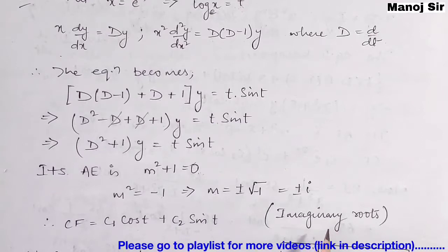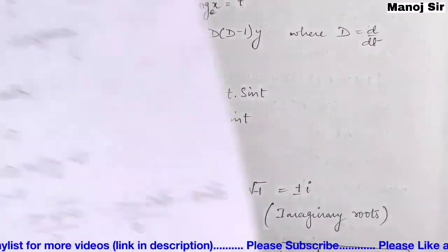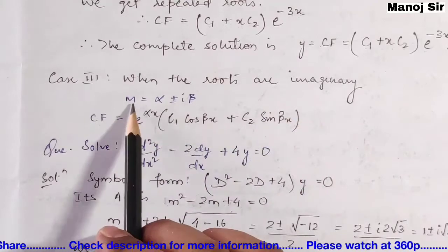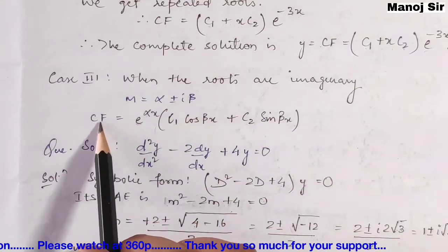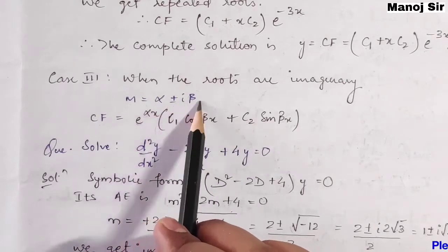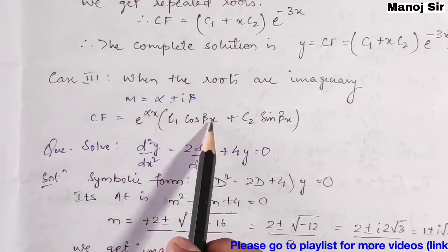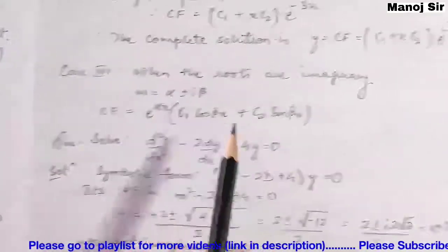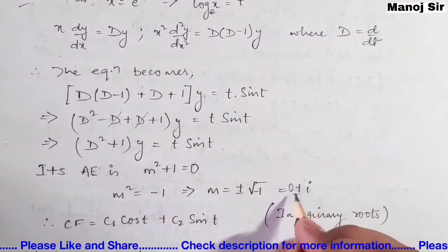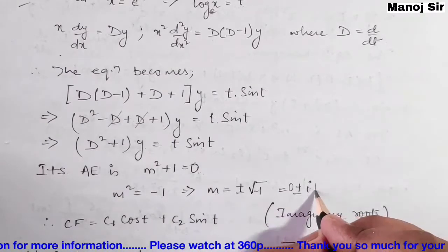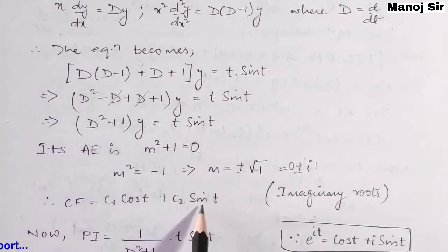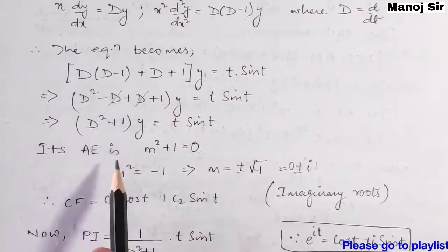When the roots are imaginary, with m = α ± iβ, the complementary function is e^(αx)[c₁cos(βx) + c₂sin(βx)]. Comparing m = ±i with this, α = 0 and β = 1, so CF = c₁cos(t) + c₂sin(t).